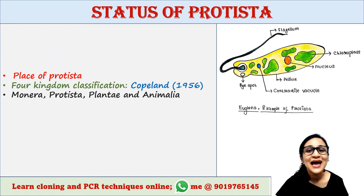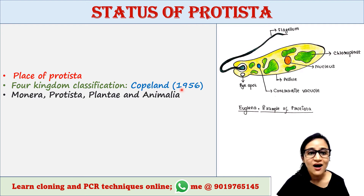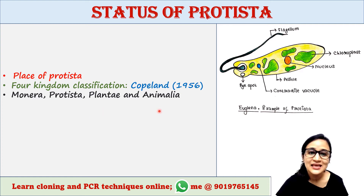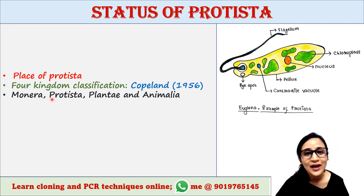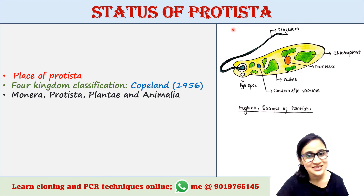Later, Copeland in 1956 proposed a four kingdom classification. According to Copeland, the four kingdoms are Monera, Protista, Plantae, and Animalia. Kingdom Monera includes unicellular prokaryotes such as bacteria, whereas unicellular eukaryotes such as yeast and protozoa remained contained in Protista.